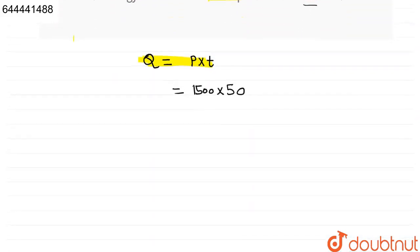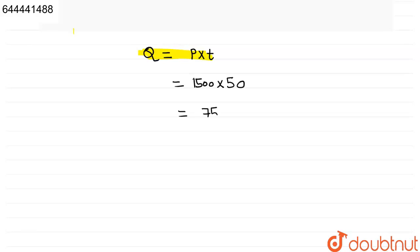So if we multiply we get 75,000, and power has watt unit and time has hour, so watt hour.